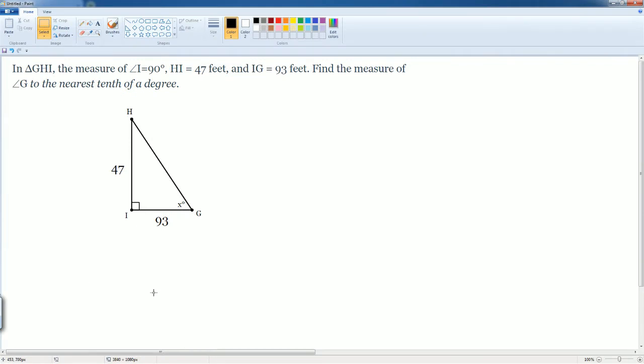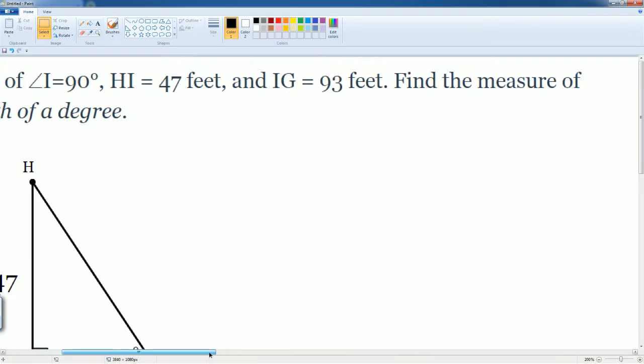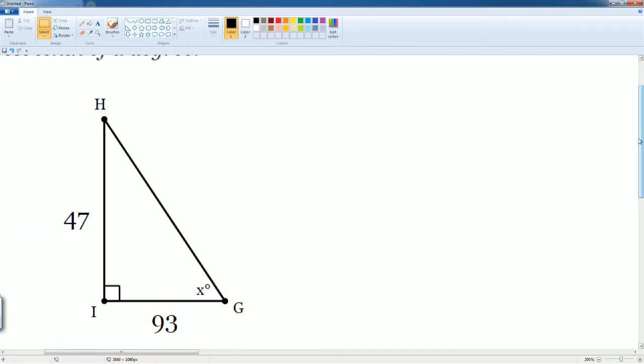So we'll start here by drawing our person like always. So we can label our information. Here's our person and we saw that it's 93, which is your closest one here, which is going to be your adjacent. And 47 here is your opposite.